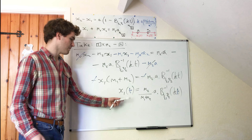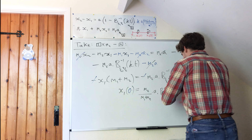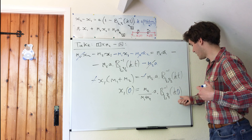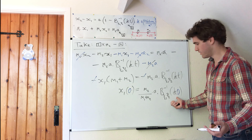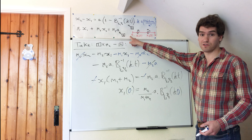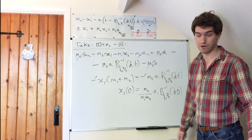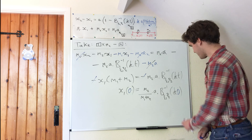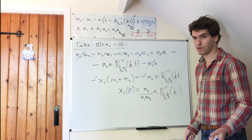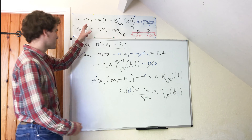The first sanity check: plug t equals zero into this. Because the incomplete beta function is zero at the argument being zero, the inverse is also zero when the argument is zero. So this will give zero, which is what we expect, because at t equals zero x1 is at position x equals zero. We'll do some extra sanity checking in the next video when we look at the graphical solutions, but for now we need to plow on and complete the rest of these solutions.